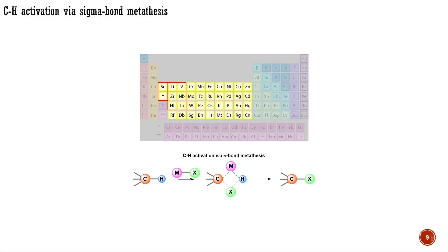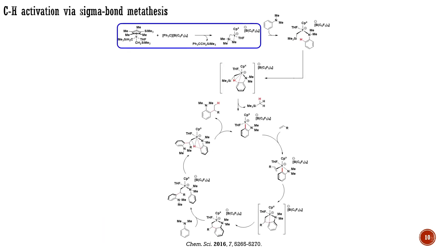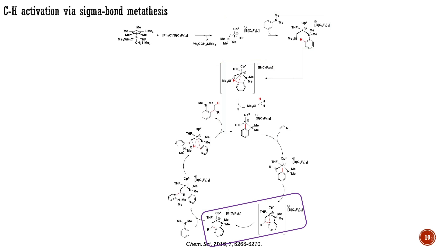The next mechanism is CH activation via sigma bond metathesis. Whenever you encounter a CH transformation catalyzed by early transition metals, you should think about sigma bond metathesis. As an example, I want to show you the yttrium-catalyzed alkylation of aniline derivatives, published in 2016. In the first step of the process, the trityl carbocation displaces one of the sigma-bonded ligands of yttrium, generating the active catalyst. This active catalyst initially coordinates to the nitrogen of the substrate, followed by CH bond cleavage via sigma bond metathesis. Subsequently, an olefin coordinates to the generated complex, initiating a heck-type insertion through a process quite similar to sigma bond metathesis.